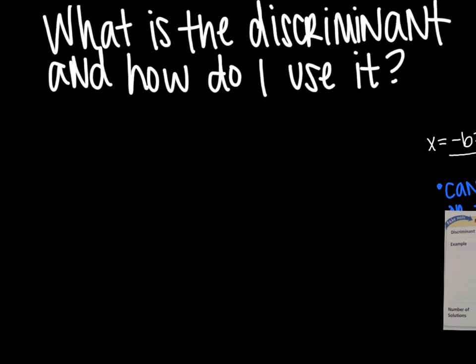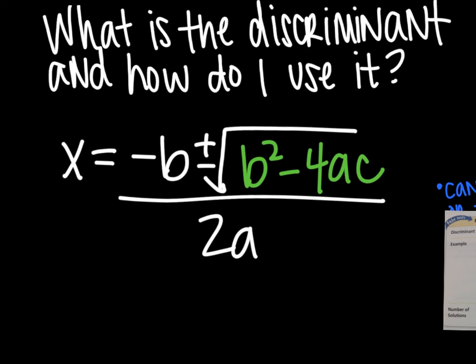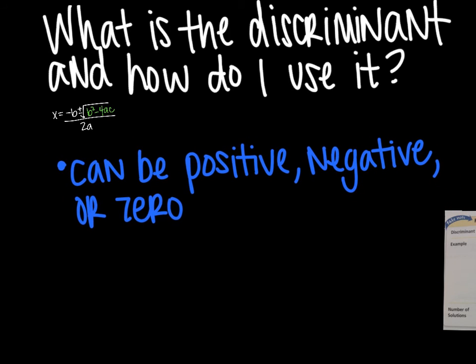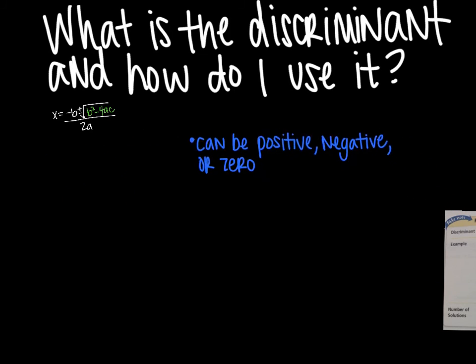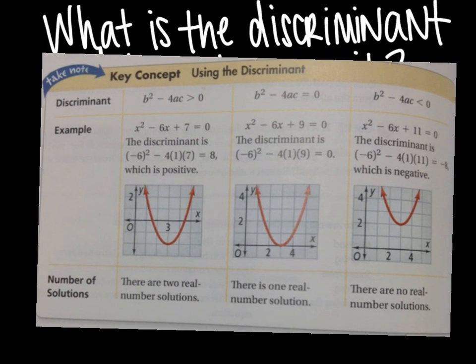What is the discriminant and how do I use it? The discriminant is what you see in green here. It's what's under the radical, the square root button in your quadratic formula. So the discriminant is b squared minus 4ac. You can use this. It can be positive, negative, or zero. But more importantly, the reason why you use it is because it tells you how many solutions you're going to have without even having to graph.